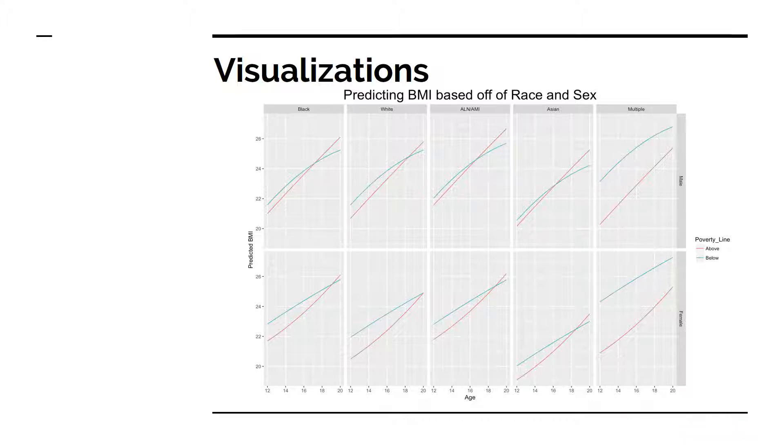Further, for all groups except the multiple race category, individuals who are below the poverty line tend to have higher average BMIs than individuals who are above the poverty line. However, at around age 17 or 18, this trend reverses, so individuals who are above the poverty line begin to have higher average BMIs. In this case, the multiple race category has fewer data points, which is why the trends do not hold true for this race level.